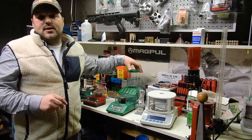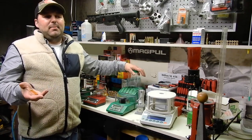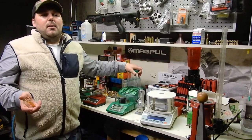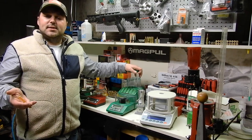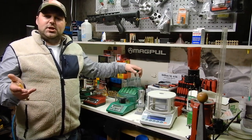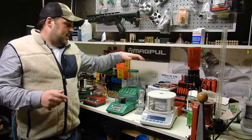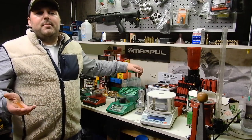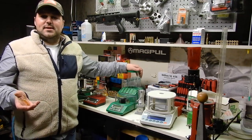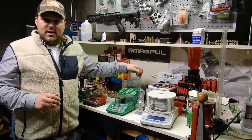If you guys are looking to get one of these RCBS Chargemasters, I think midway they're like $325. But if you go on Natchez Shooting Supplies, N-A-T-C-H-E-Z Shooting Supplies, they have these on sale every time I look. You can get them for maybe $259, $269. Every time I look, that's what they cost.